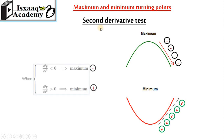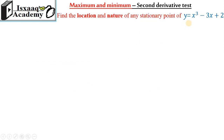When the second derivative is negative, that means we have a maximum point. When the second derivative is positive and the slope is low and equals zero, the second derivative test gives us the minimum point.